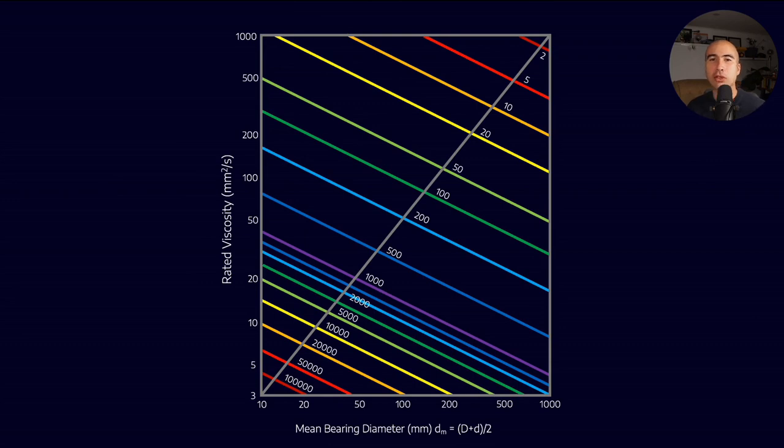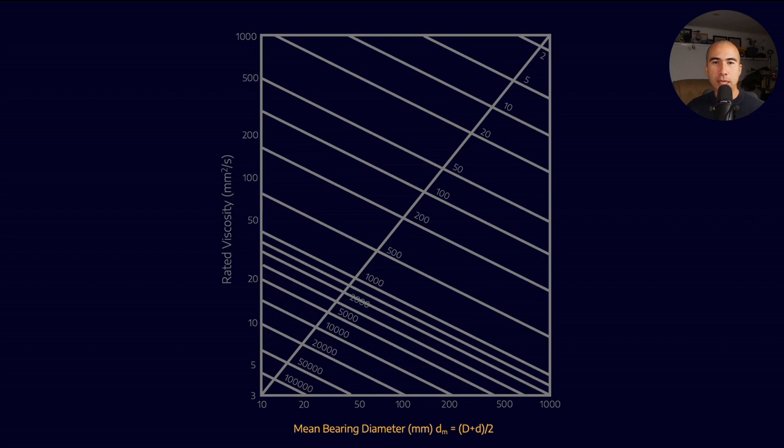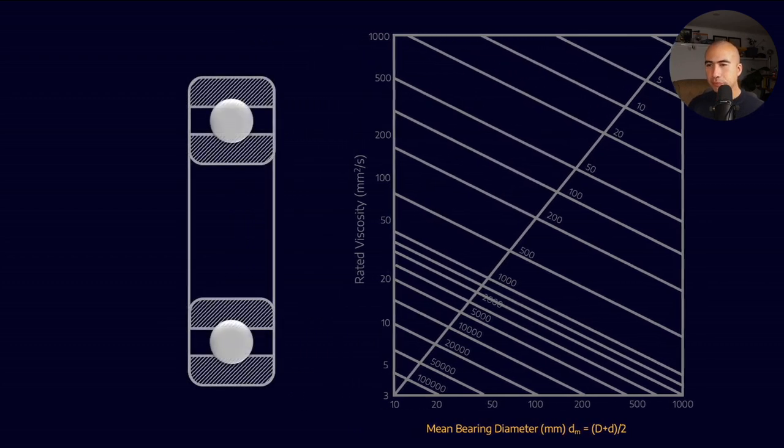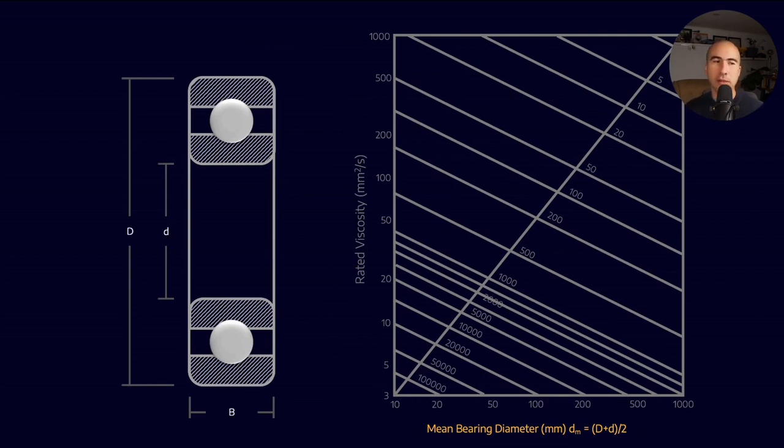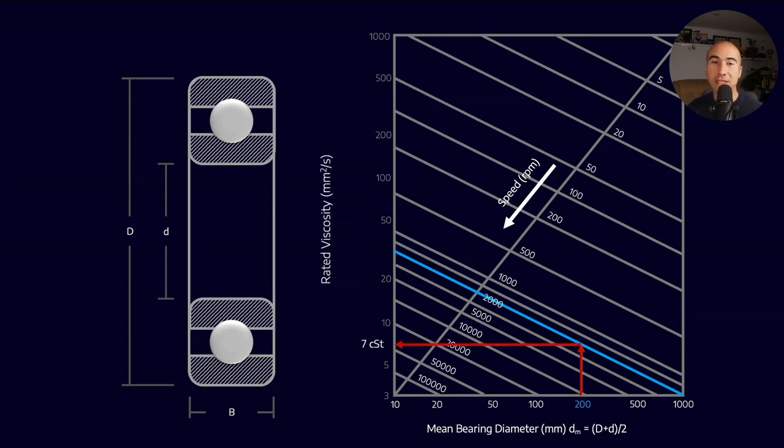More likely, you'll do calculations via a chart or app. This one from FAG shows mean bearing diameter and capacity to get rated viscosity, with colored lines representing speed. The mean bearing diameter is outer diameter plus inner diameter divided by two. For example, with 200mm mean diameter at 2000 RPM, I go up to the 2000 line and read across for seven centistokes rated viscosity.